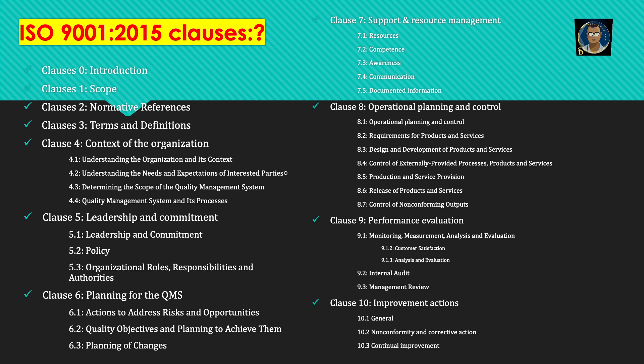Clause 5 is leadership and commitment, with three sub-clauses: 5.1 leadership and commitment, 5.2 policy, 5.3 organizational roles, responsibilities, and authorities. Clause 6 is planning for the quality management system, with three sub-clauses: 6.1 actions to address risks and opportunities, 6.2 quality objectives and planning to achieve them, 6.3 planning of changes.